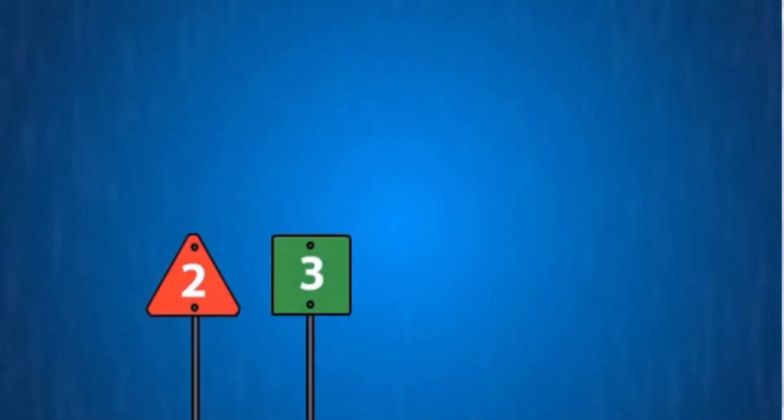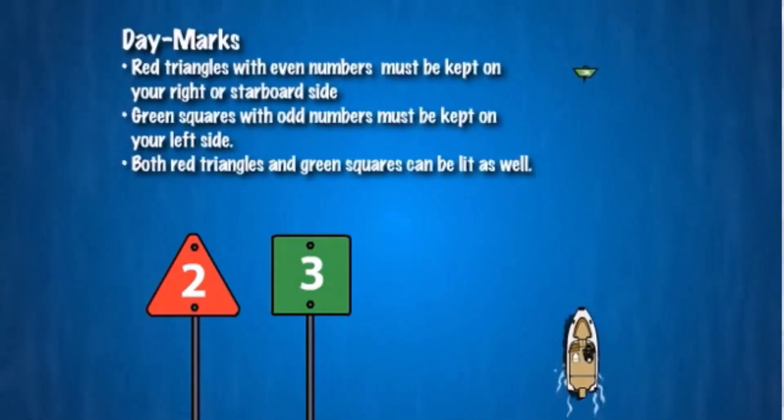Day-marks are either red triangles with even numbers which are the equivalent of nun buoys and must be kept on your right or starboard side, or green squares with odd numbers are the equivalent of can buoys and must be kept on your left side. Both red triangles and green squares can be lit as well.